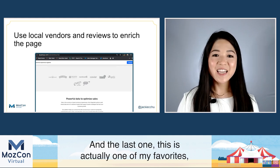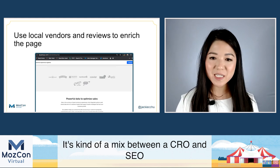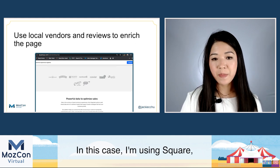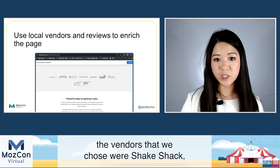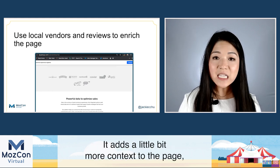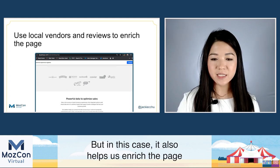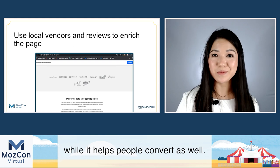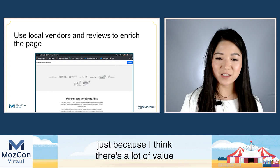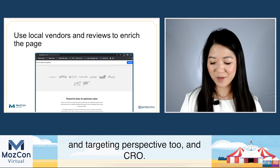All of these are small signals that add up and help clarify your country targeting to Google. My last tip here is one of my favorites — and you can't do this for every page — but adding local vendors and reviews is great. It's a mix between CRO and SEO. For example, at Square, the vendors we chose were Shake Shack, Ben & Jerry's, Caviar — all local US-based businesses. It adds context to the page, Google knows it's a US-based entity, and it also helps enrich the page and helps people convert.